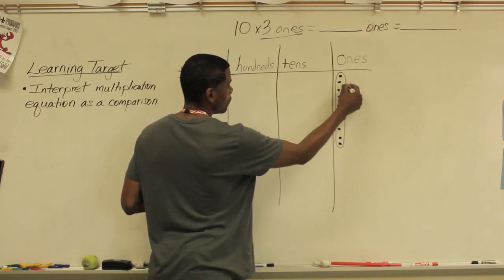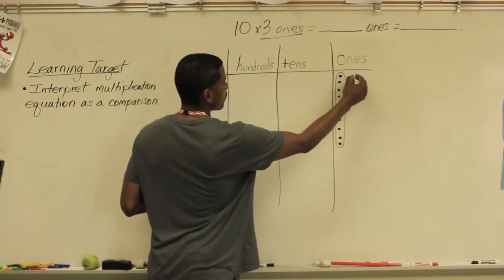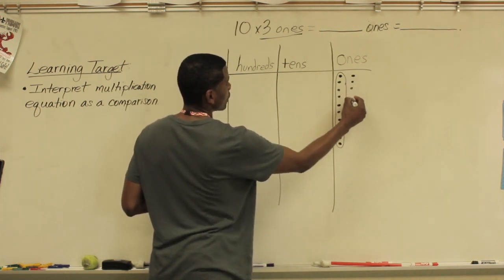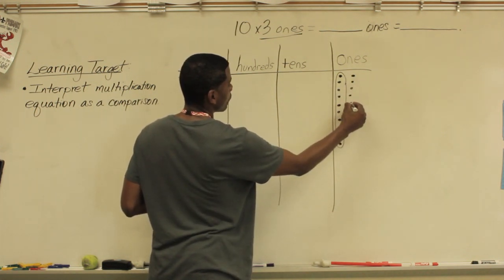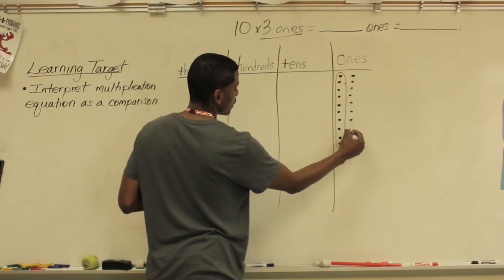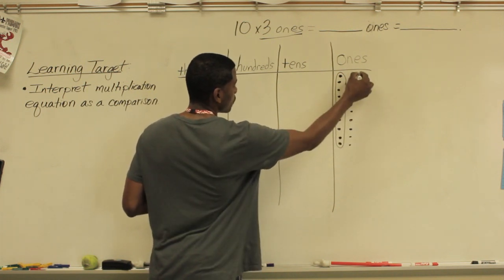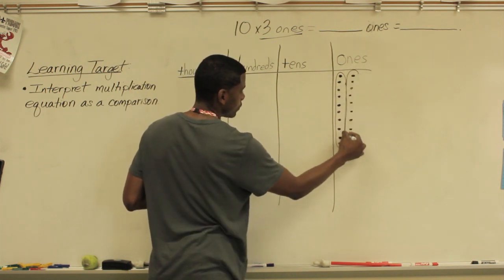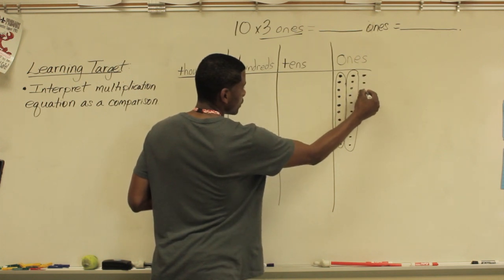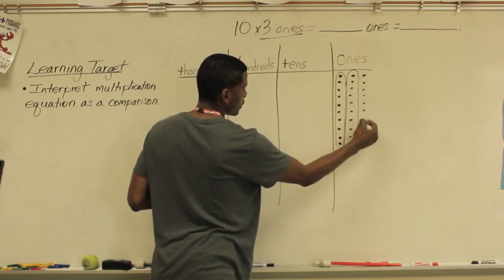So that is one unit in the ones. So we have another one — one, two, three, four, five, six, seven, eight, nine, ten. This makes two. And we just repeat that for the third set.